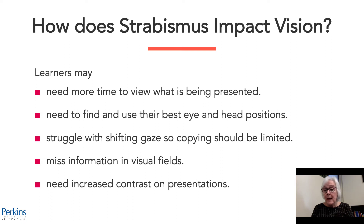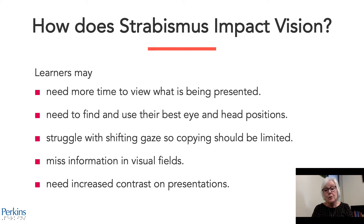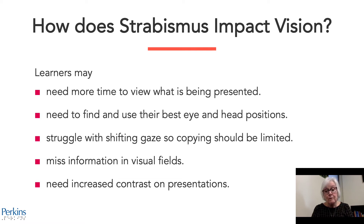So how does strabismus impact vision? Learners will need more time to view what is being presented when they have strabismus. They'll need to find and use their best eye and best head positions in order to access the learning environment. They will struggle with shift of gaze, so copying should be limited. They will miss information in certain visual fields depending on where their eyes are turned, and they will need increased contrast in presentations and learning.